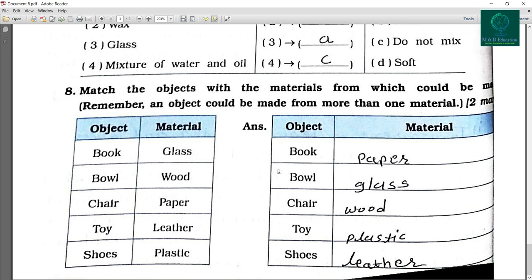Now you can see answer book. Actually book is made from paper. Bowl is made from glass as well as plastic. You can write plastic here also.